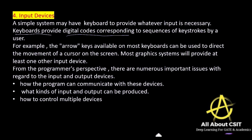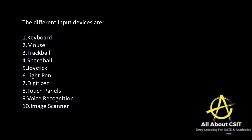From a programmer's perspective, numerous important issues must be considered when working on input and output devices: how programs communicate with devices, what kind of input and output can be produced, and how to control multiple devices. The different input devices used in graphic systems include keyboard, mouse, trackball, space ball, joystick, light pen, digitizer, touch panel, voice recognition, and image scanner.